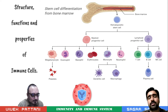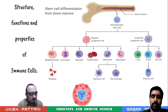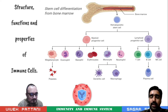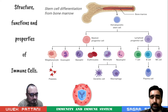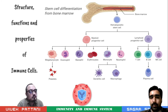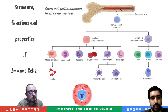We are going for the structures, functions and properties of immune cells. There are some immune cells which directly affect our immunity. First we will go for stem cell differentiation from the bone marrow. In bone marrow we find hematopoietic stem cells which are divided into two types: myeloid and lymphoid.